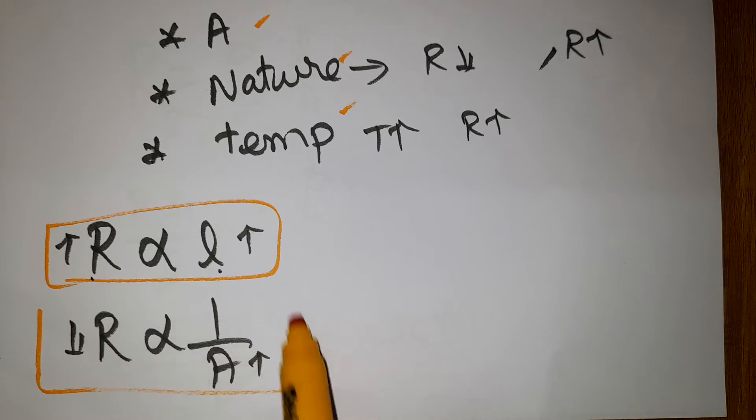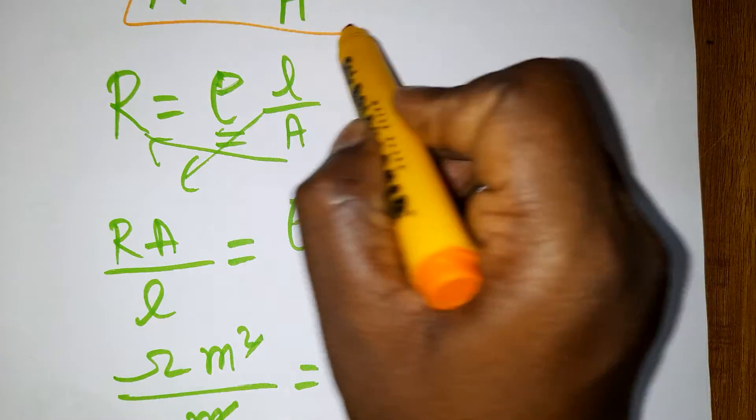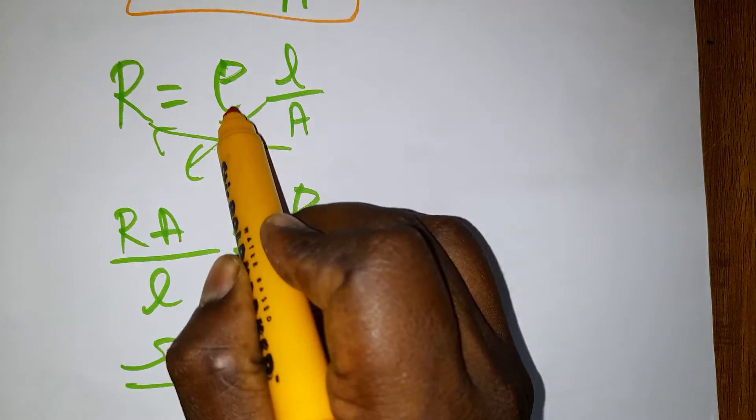Length is directly proportional and area is inversely proportional to resistance. When you remove the direct proportionality constant, you get resistivity.